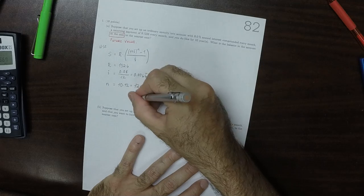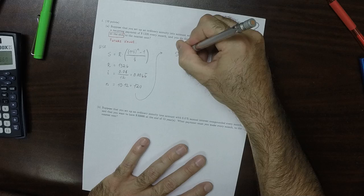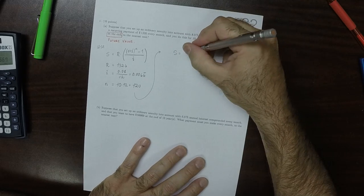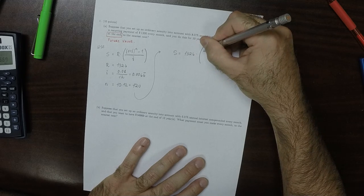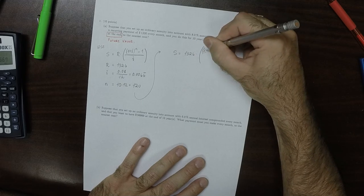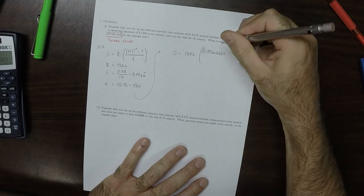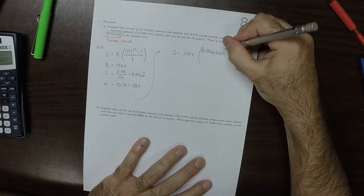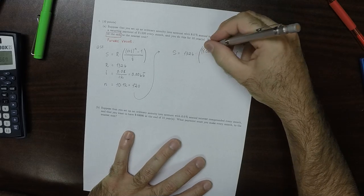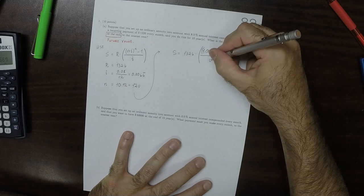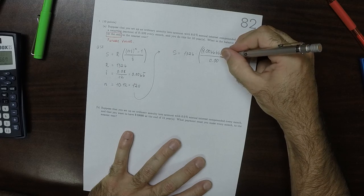So then plugging all this in, we obtain that S is 1,326 multiplied by 1.00666666, I'll do seven sixes, to exponent 120 minus 1 divided by 0.00 with six sixes.